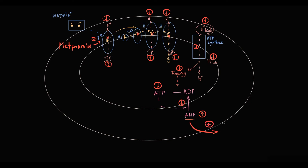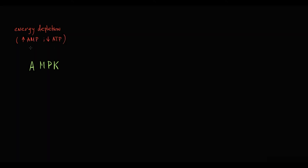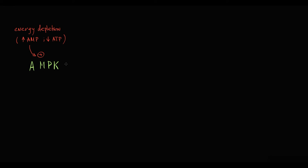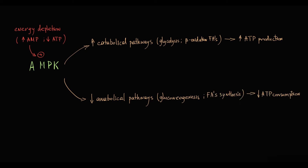High AMP levels activate AMP-activated protein kinase (AMPK), which is an important energy sensor that maintains cellular energy homeostasis. In case of energy depletion — marked by high AMP and low ATP levels — AMPK becomes activated and stimulates catabolic pathways such as glycolysis and beta-oxidation of fatty acids to produce ATP, while simultaneously inhibiting ATP-consuming anabolic pathways such as gluconeogenesis and fatty acid synthesis, thereby preserving and restoring cellular ATP stores.